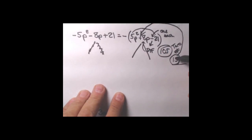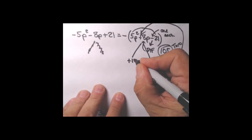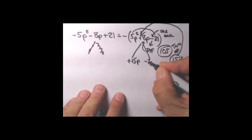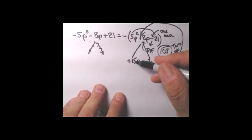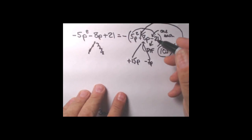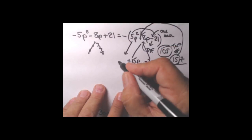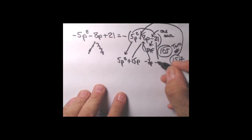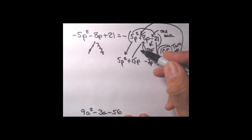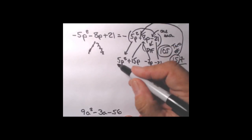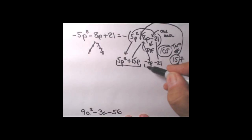The 15 gets a plus sign, so we write plus 15p. The 7 gets the other sign, minus, so minus 7p. Double-check: plus 15p minus 7p does give plus 8p — no mistakes so far. Now bring the first term 5p squared and last term minus 21 down exactly as they are. We have four terms and we finish with the grouping process.